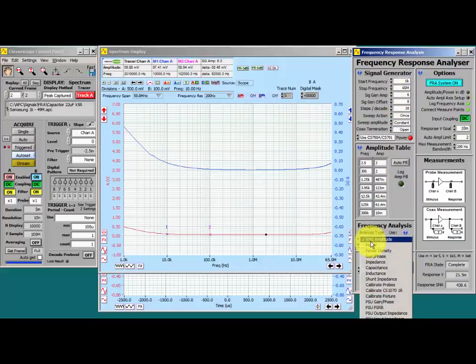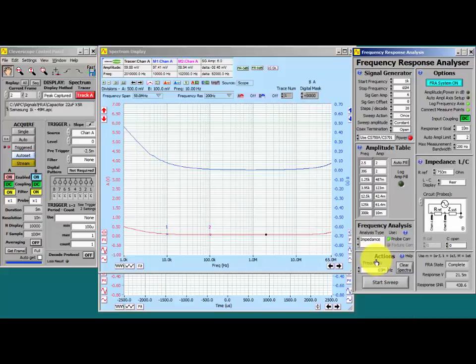Down here we're going to choose the impedance analysis type and now we have some choices as to what to plot on channel B. We can either show the effective series resistance or the quality or dissipation factor or phase. We'll go for effective series resistance.